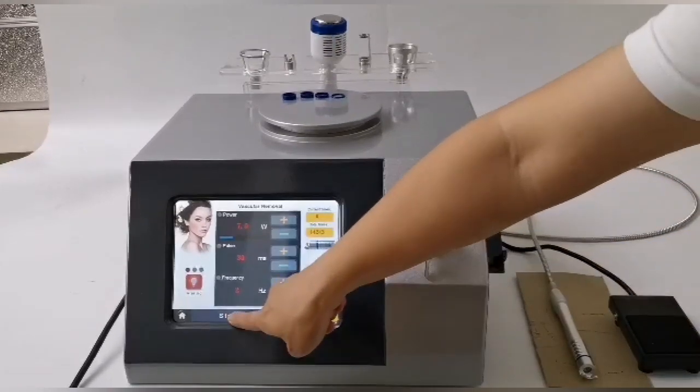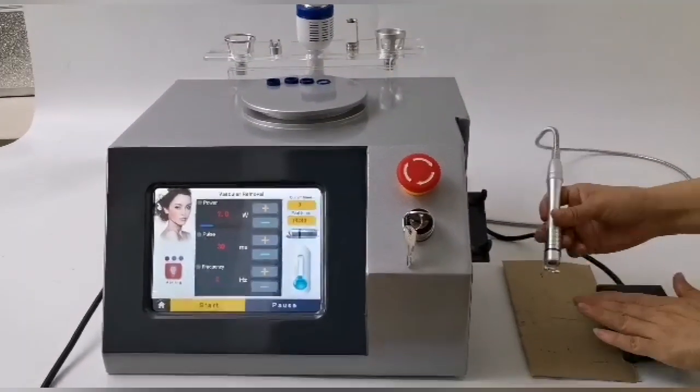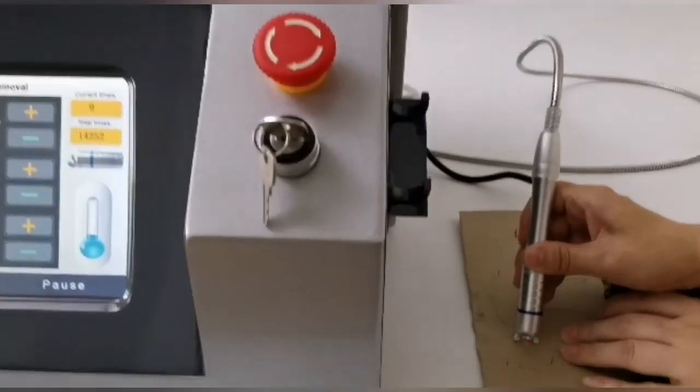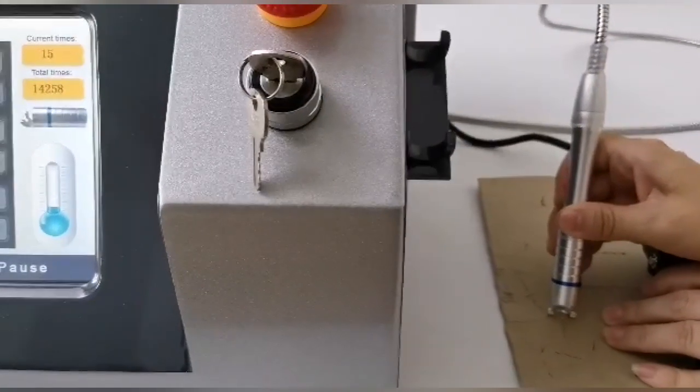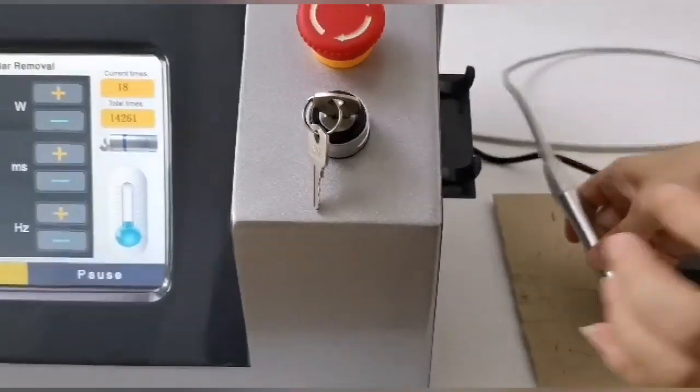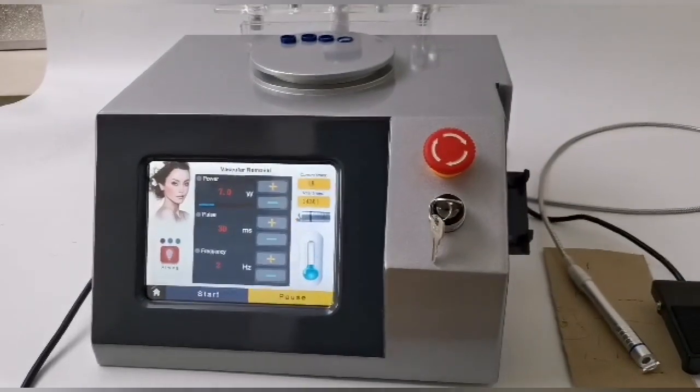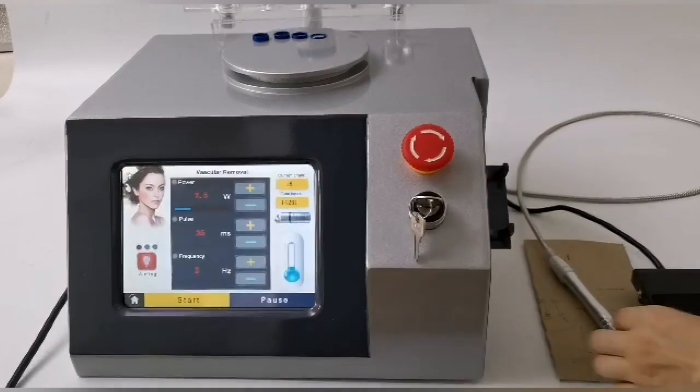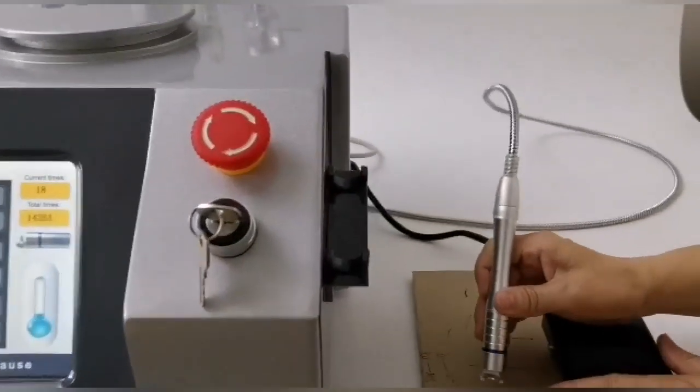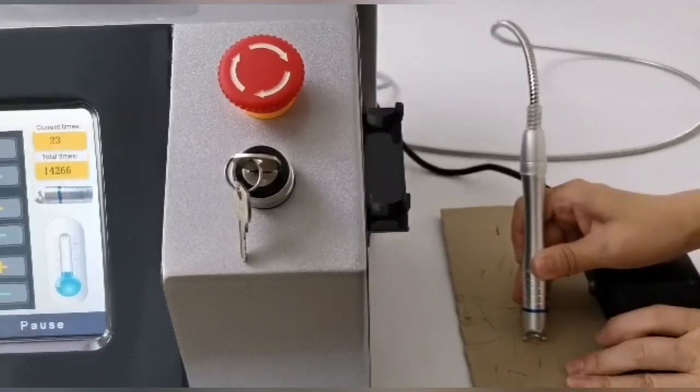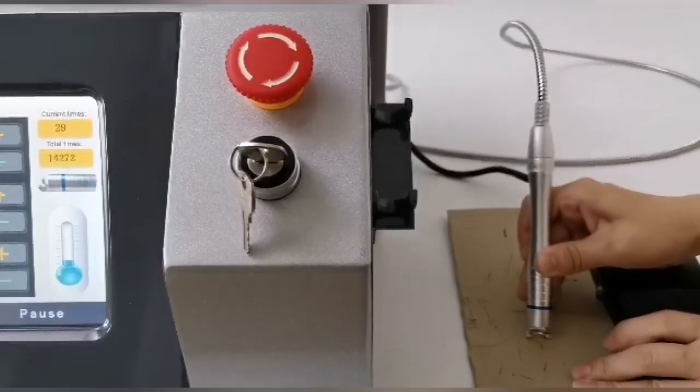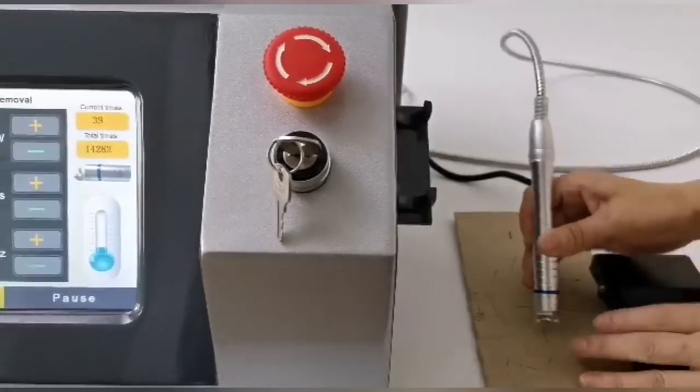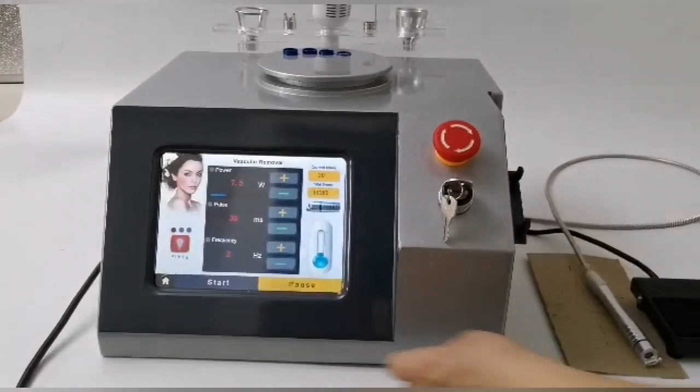Click on the start button, step on the foot pedal, and the laser starts to output. If the parameters are not perfect and need to adjust, return to the suspension state to adjust. For example, increase the energy or pulse width a little. Click again to start and treat again.